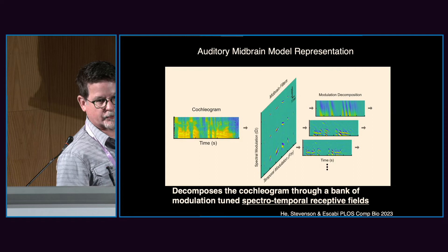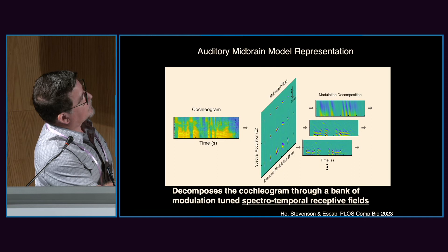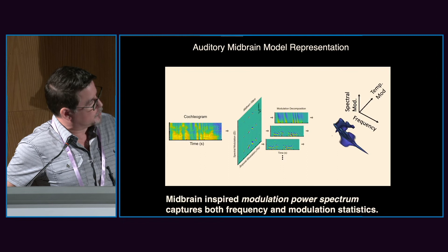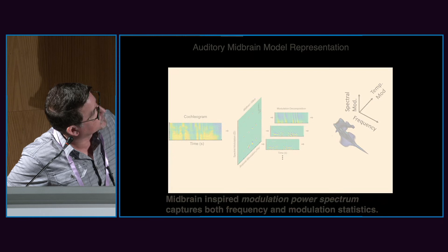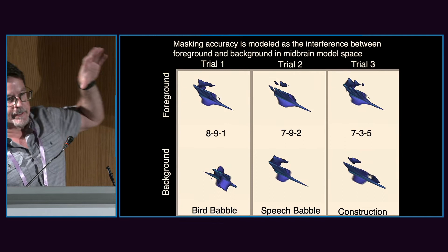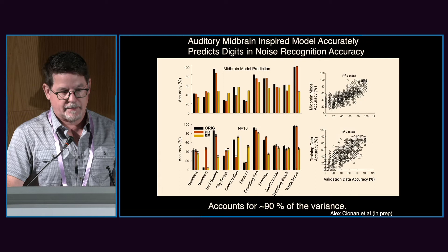So we build a model based on auditory midbrain physiology using spectrotemporal receptive fields — filter functions that describe the filtering of the spectrogram and break it down into different resolutions. We average power across three dimensions: frequency, temporal modulations, and spectral modulations. The idea is that we'll have interference in this high-dimensional space. Using the same linear regression approach, the midbrain model actually improves quite a bit — predicting nearly 90% of the variance.